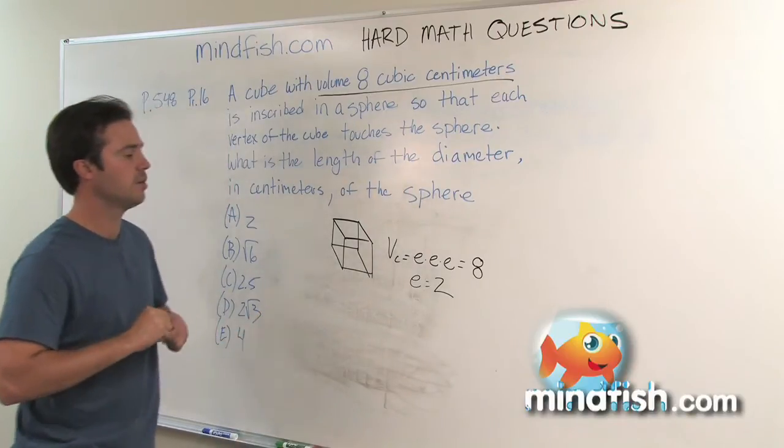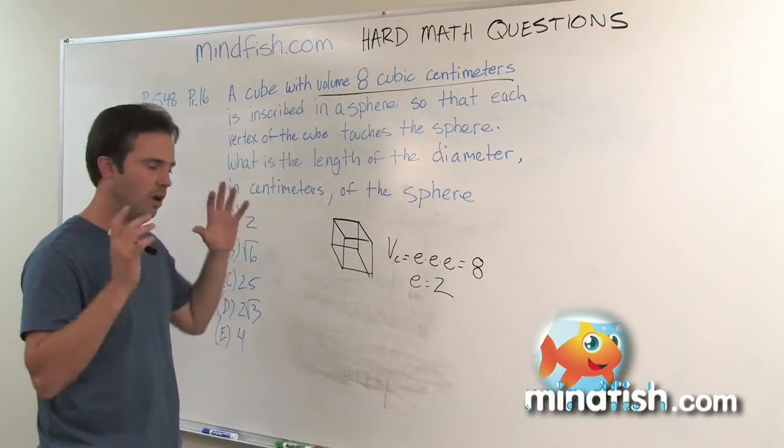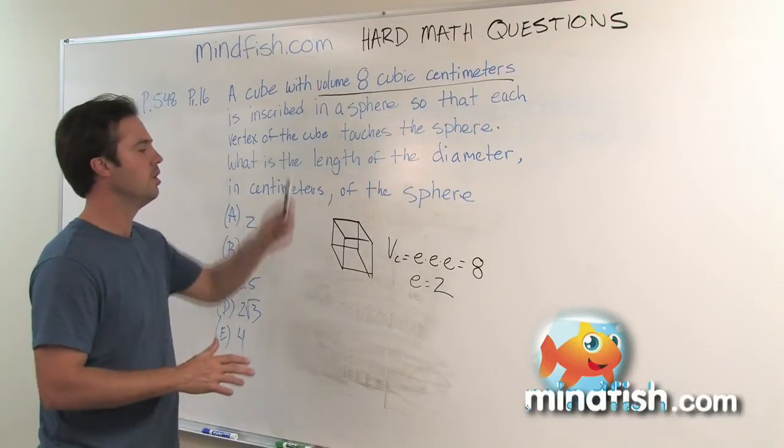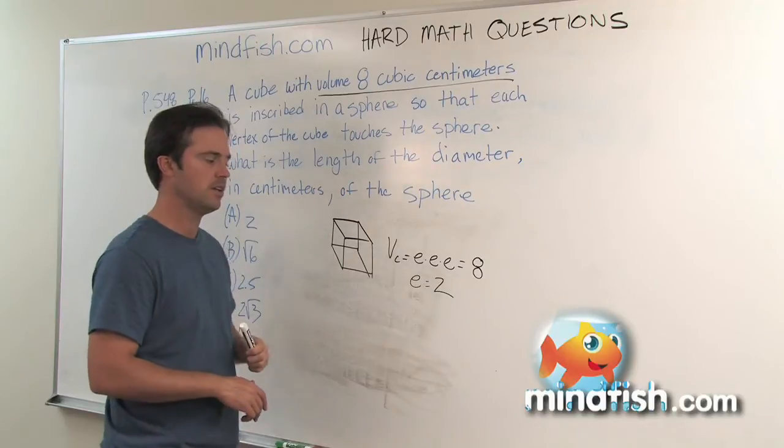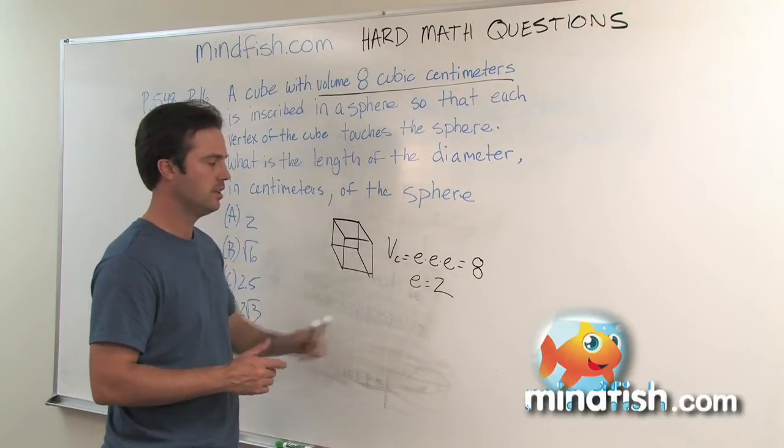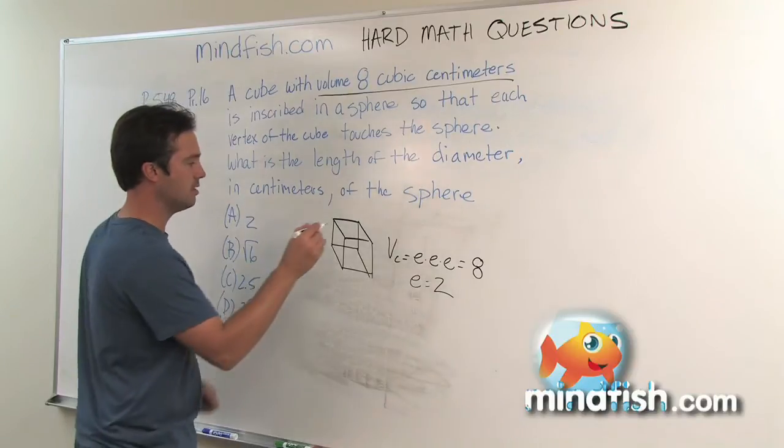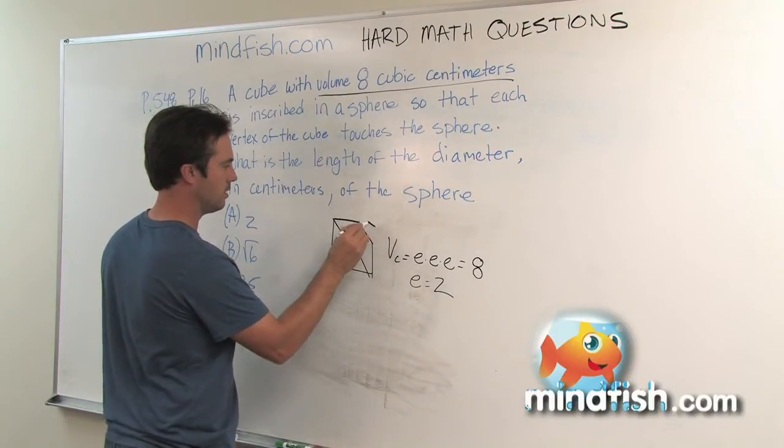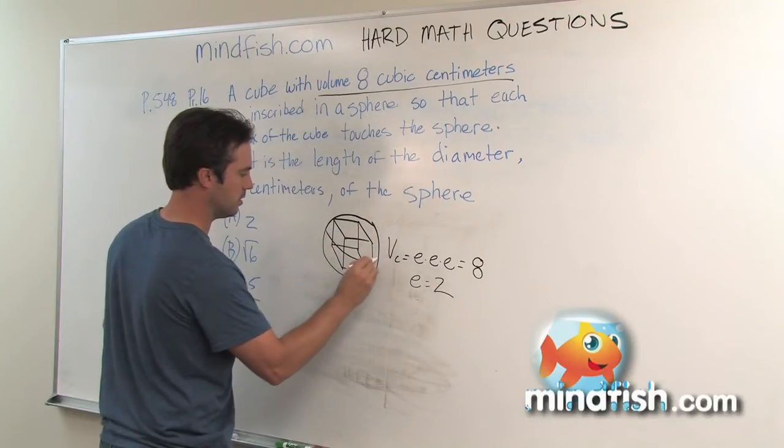Now a lot of people don't even get through this part, and one of the reasons is that they don't write things down. So on all hard questions, if you're not sure what to do, write something down. Write the volume of a cube down and you would automatically find out what the edge is. Now we know the edge is two. It says our cube is inscribed in a sphere. I'm not the greatest artist in the world here, but I'm going to try to give you an idea of what this looks like.